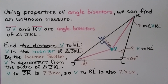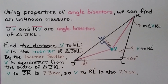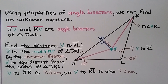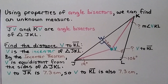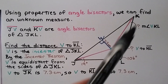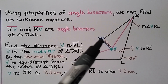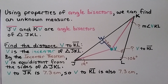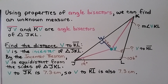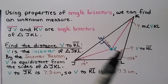Using properties of angle bisectors, we can find an unknown measure. JV and KV are angle bisectors of triangle JKL. We need to find the distance from V to KL. We can see V to W is 7.3 centimeters. V is the in-center of triangle JKL, and by the In-Center Theorem, V is equidistant from the sides of triangle JKL. So this distance must also be 7.3 centimeters, and if we drew a perpendicular line to the third side, that would also be 7.3 centimeters.